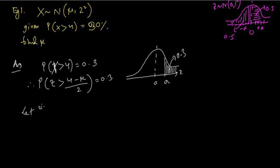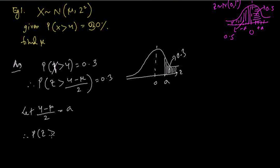So let (4 minus μ) divided by 2 equal a. Therefore, probability of z greater than a equals 0.3. For this type of sum where the probability is given and we have to find the mean or standard deviation, we have a special table called the percentage table, which is a greater-than table.